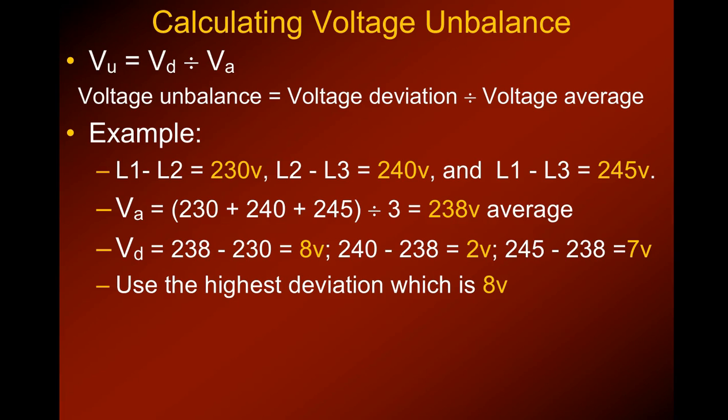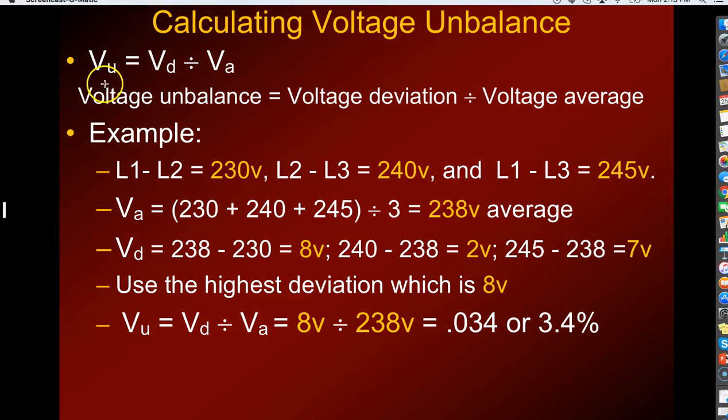And then you're going to use the highest deviation, which in this example is 8 volts. Then you're going to want to apply it to the formula. Now remember, we're solving for the voltage unbalance, which is the VU. We just figured the voltage deviation and the voltage average in these first two formulas. Now we want to come up with the voltage unbalance. So you take the voltage deviation, which was 8 volts, you divide it by the voltage average, which was 238 volts. That comes out to 0.034. And if you remember from school, you have to move that decimal point over two places to get your percentage, and we end up with 3.4% voltage unbalance.